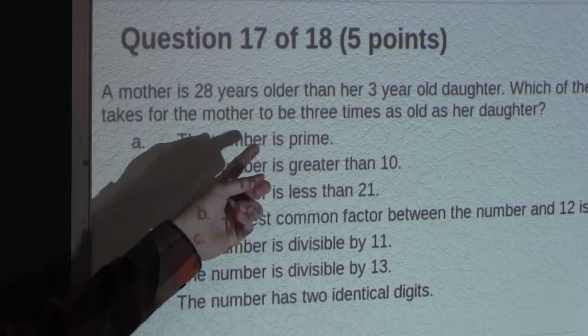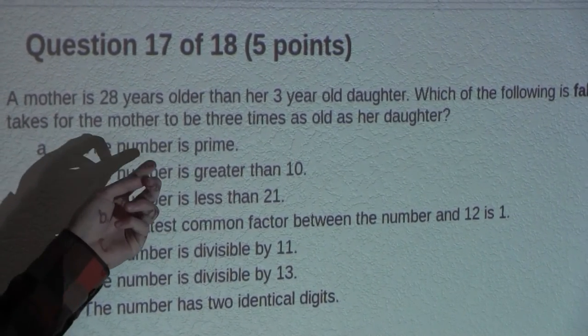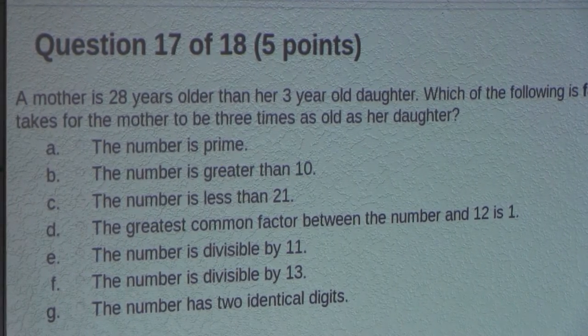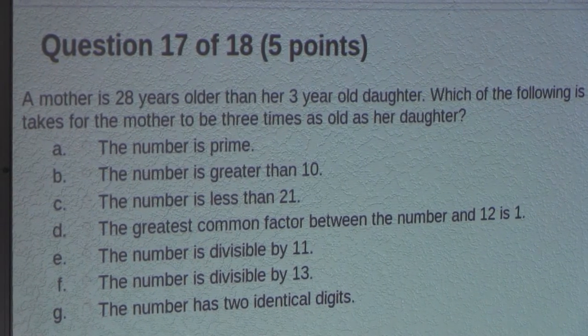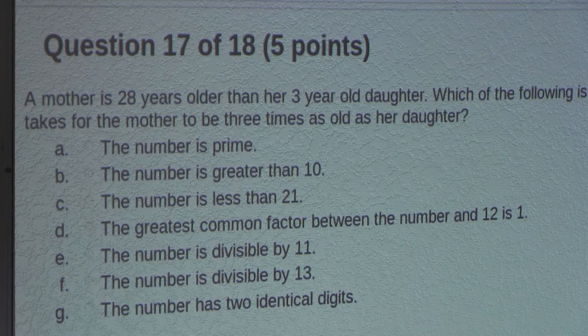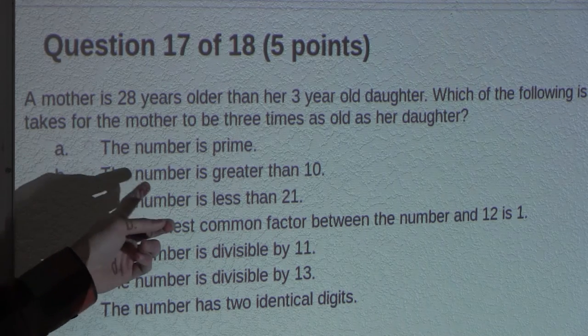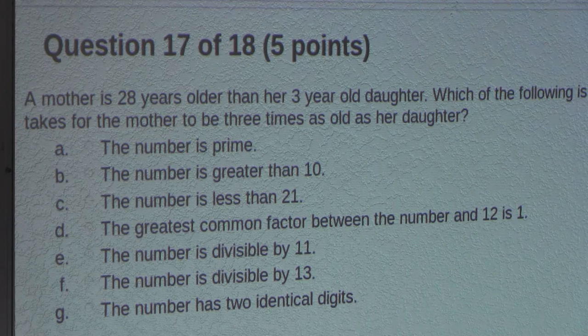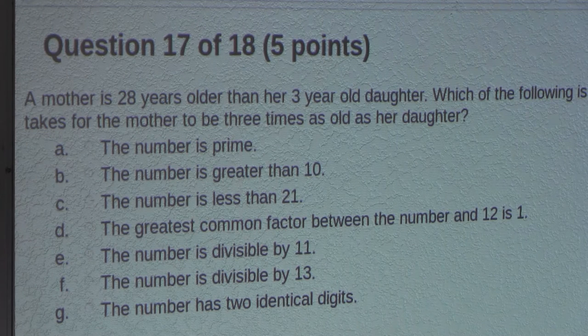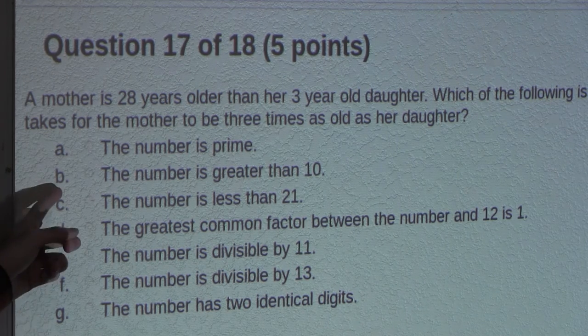Okay, option A, the number is prime. Well, that option is true, because 11 is a prime number. It's only divisible by 1 and itself. So it can't be option A. Option B, the number is greater than 10. Well, that's true, because 11 is greater than 10. So it's not option B either.